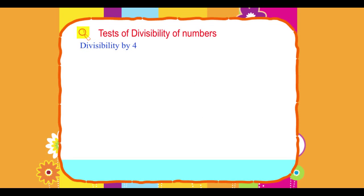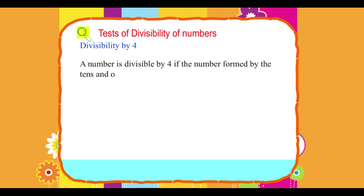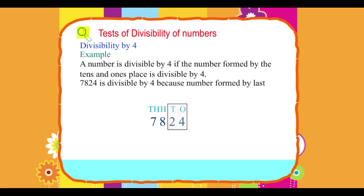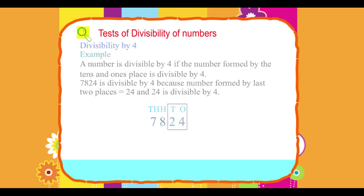Divisibility by 4: A number is divisible by 4 if the number formed by the digits in the tens and ones place is divisible by 4. Example: 7824 is divisible by 4 because the number formed by the last two digits is 24, and 24 is divisible by 4.